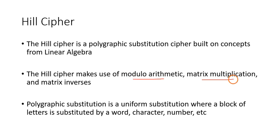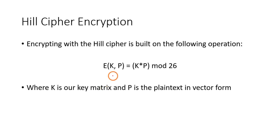How is encryption performed in Hill cipher? The encryption formula is C equals K times P mod 26. This is the cipher text. K is the key matrix and P is the plaintext which is in vector form.